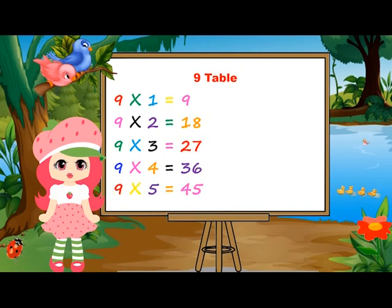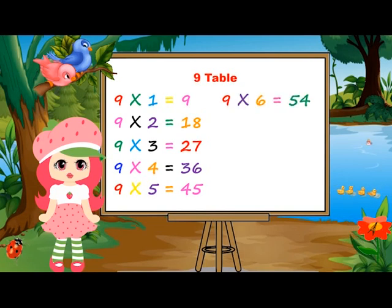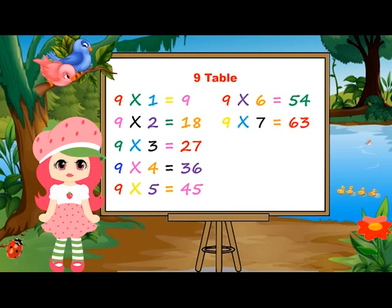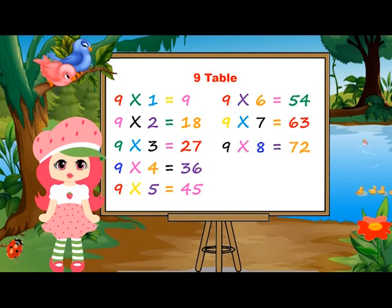9 fives are 45. 9 sixes are 54. 9 sixes are 54. 9 sevens are 63. 9 sevens are 63. 9 eights are 72. 9 eights are 72.